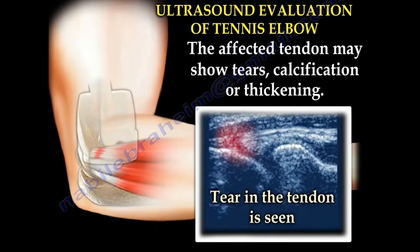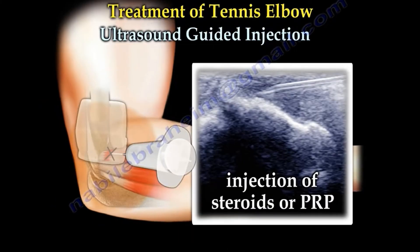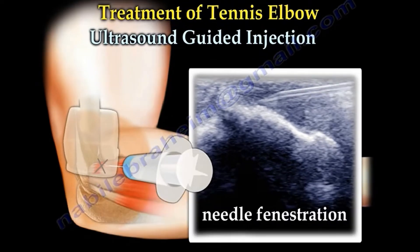The affected tendon may show tears, calcification, or thickening. Doppler may show increased flow in the tendon. You can see the needle while injecting steroids or PRP. You can also perform needle fenestration, or needling, which will help tendon healing by improving its blood supply.